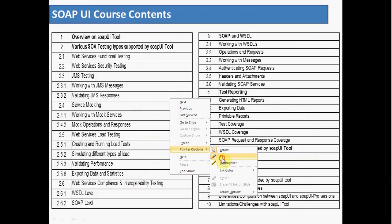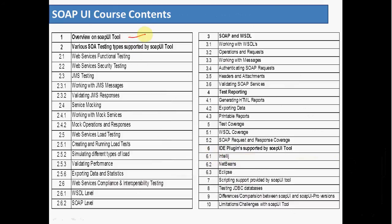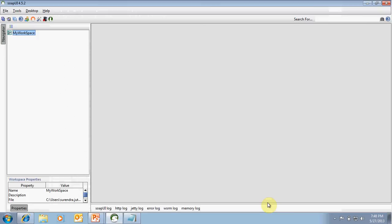As part of the training we will also have a session on SOAP UI, one of the open source tools. We will cover an overview of the SOAP UI tool, supported testing types including functional testing, security testing, JMS testing, mocking of services, load testing, and exporting statistics. We'll also look at compliance and interoperability testing at the WSDL and SOAP level, working with WSDLs, operations and requests, messages, authenticating SOAP requests, handling headers and attachments, validating SOAP responses, reporting, supported plugins, and limitations of the SOAP UI tool.